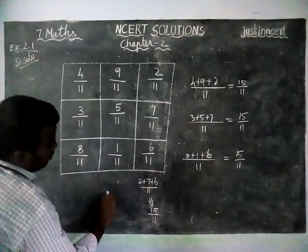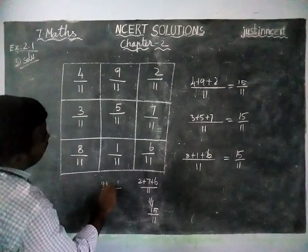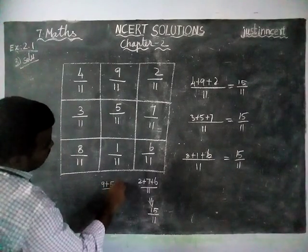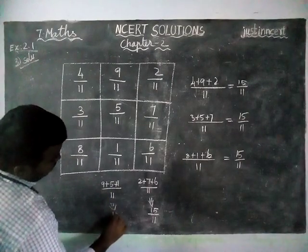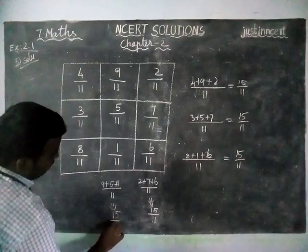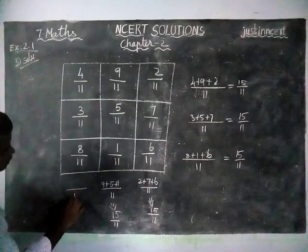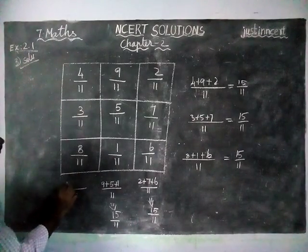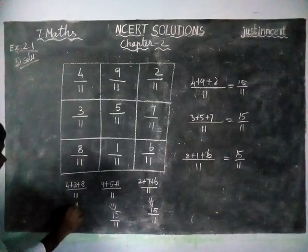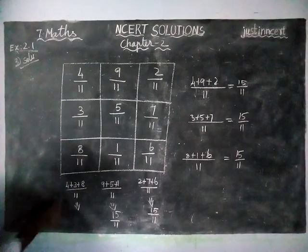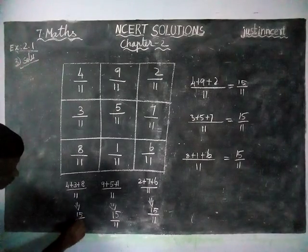Next, common denominator 11: 9 plus 5 plus 1 — 10 plus 5 is equal to 15 by 11. Next, this is also common denominator 11: 4 plus 3 plus 8 — 4 plus 3 is equal to 7, 7 plus 8 is equal to 15 by 11.